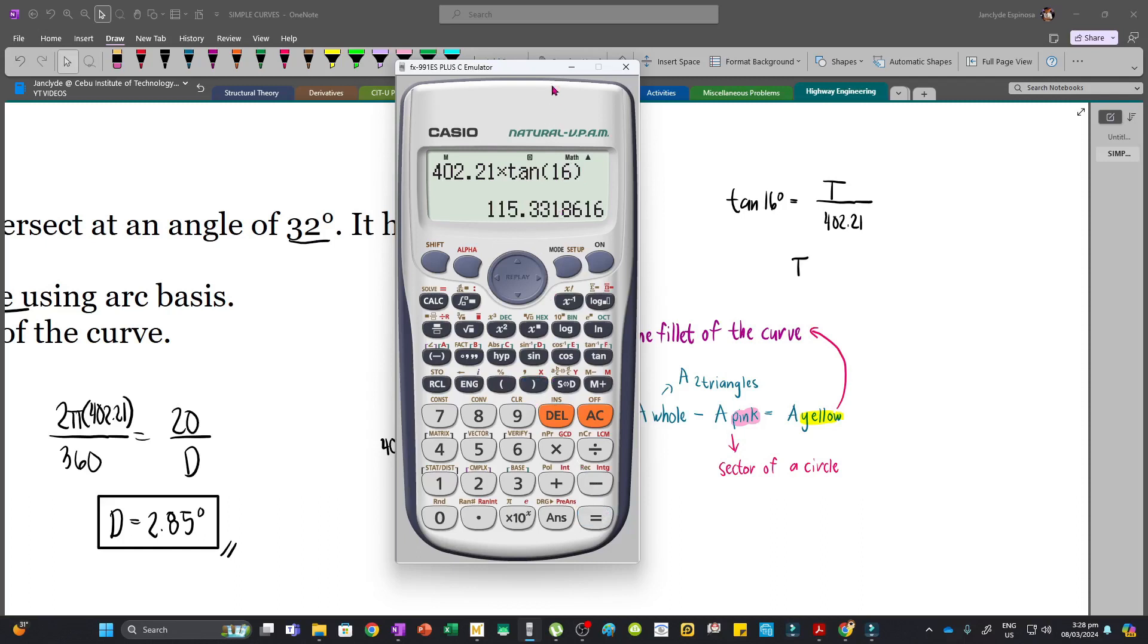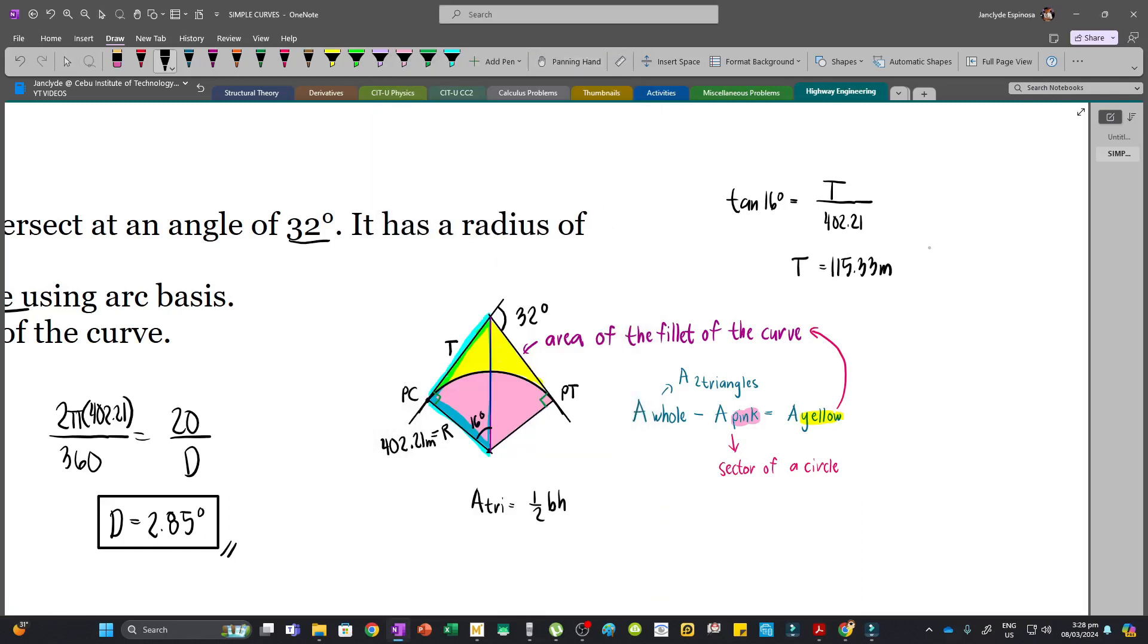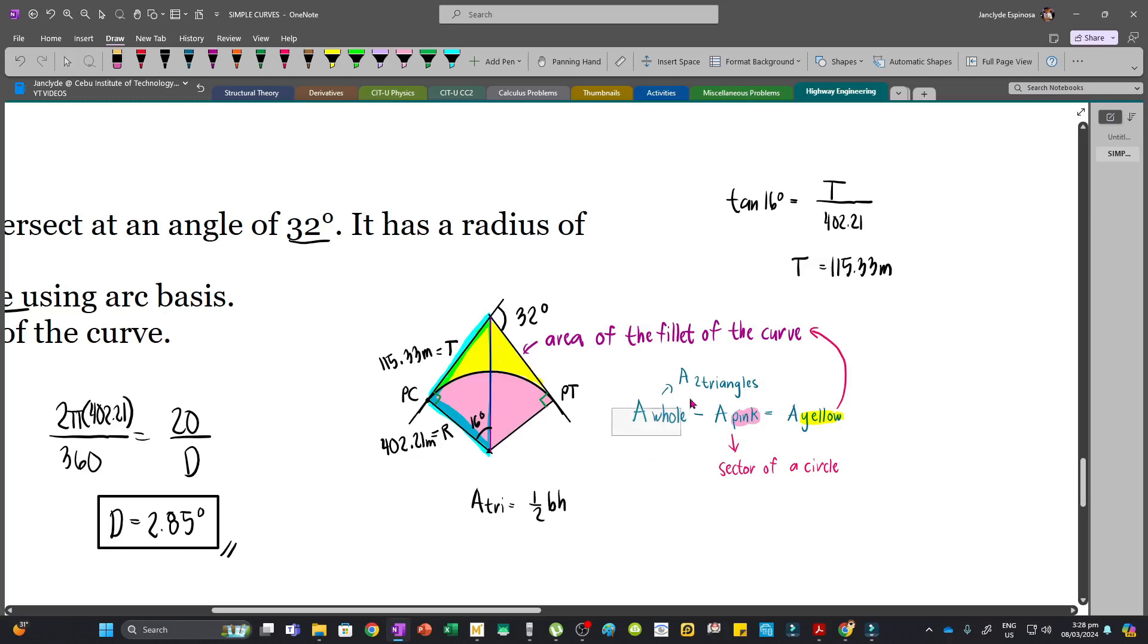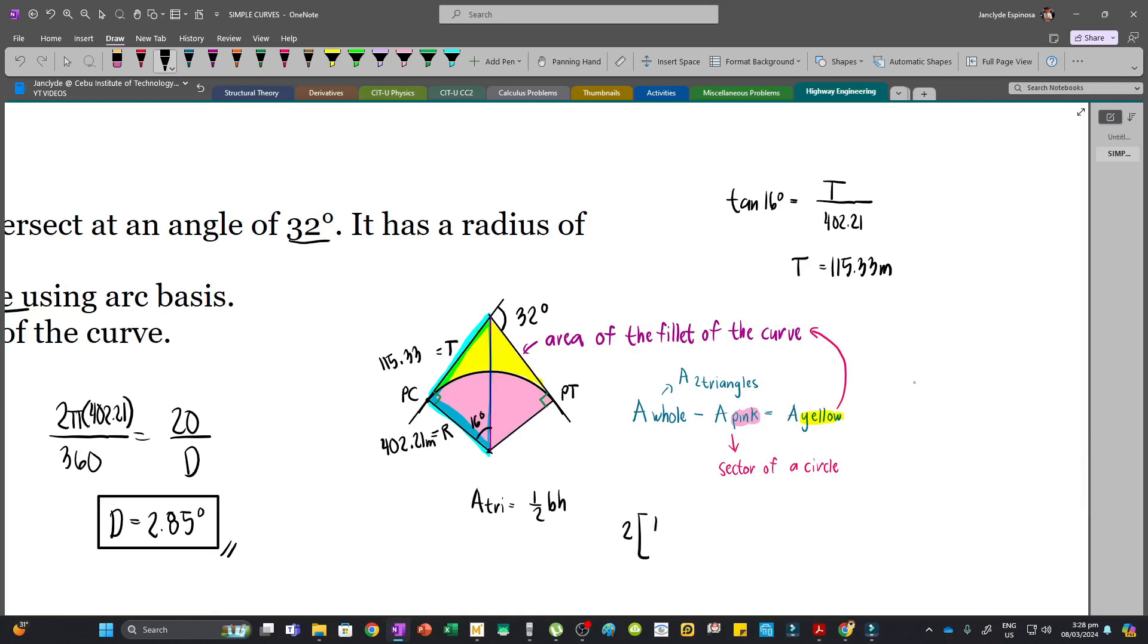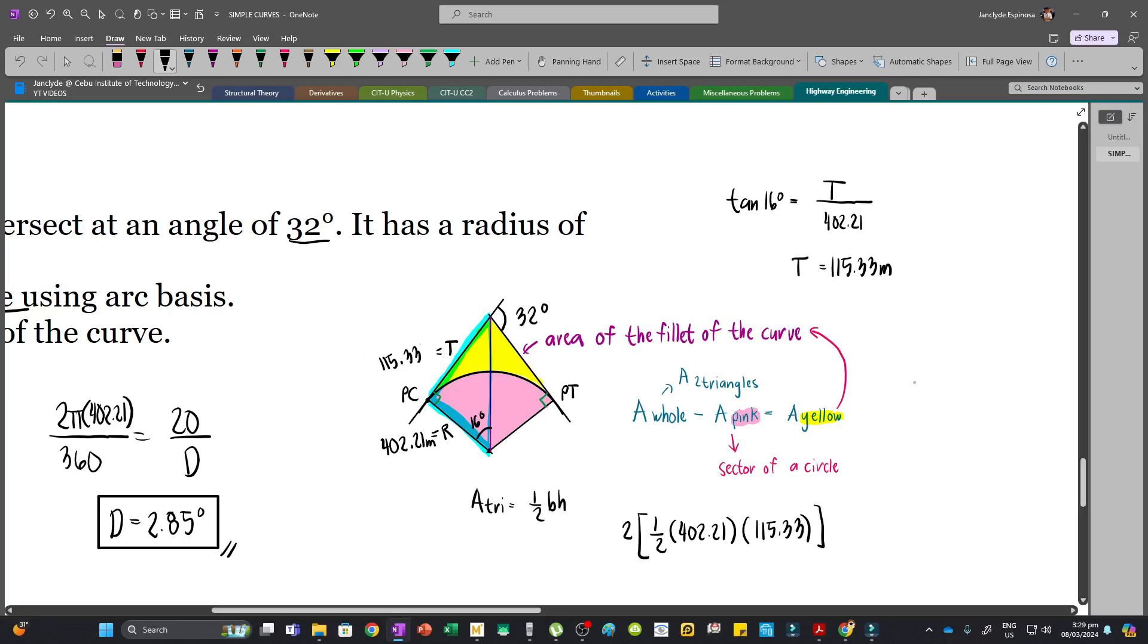And so the whole area will be the area of two triangles, this and this. So we have two times one half times the base which is 402.21 multiplied by the height which is 115.33, and then we'll subtract the sector of a circle or this pink area. So minus.